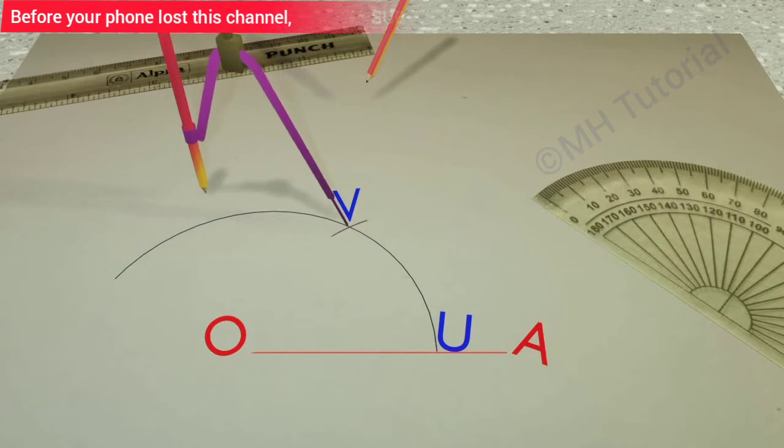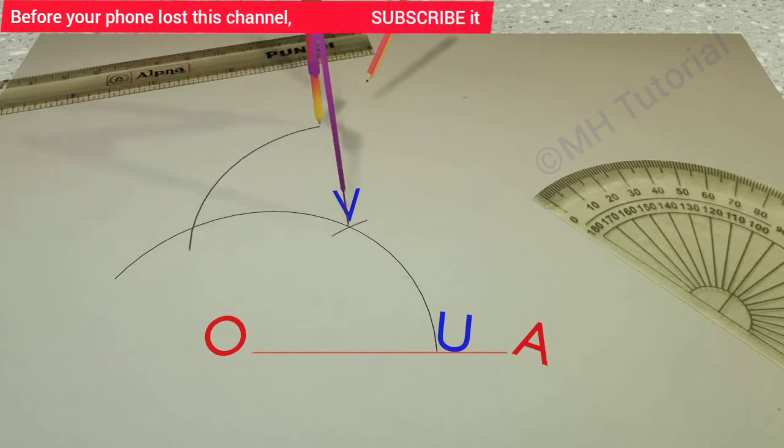Another circle segment of equal radius is drawn, centering the point V. This time, a bigger arc has been drawn. Suppose this circle arc intersects the first one at the point W.